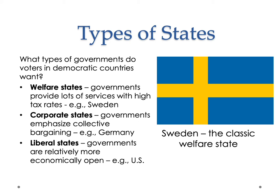Liberal states are where governments are relatively more economically open—they try not to intervene so much within the economy and tend to tax at lower rates. These are different kinds of democracies. Welfare states are usually seen as the Scandinavian states: Denmark, Sweden, Norway, and to a lesser degree Finland. Corporate states include Germany and France. Liberal states include the U.S. and the U.K. The idea is that some democracies place greater emphasis on social programs, others on an unregulated market.